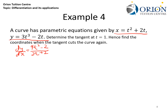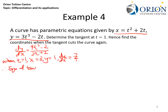First, let's find dy/dx: it equals (9t² minus 2) divided by (2t plus 2). Since we are given t equals 1, when t equals 1, x equals 3, y equals 1, and dy/dx equals 7/4. Therefore, the equation of the tangent is y minus 1 equals (7/4)(x minus 3). Simplifying, y equals (7/4)x minus 17/4.